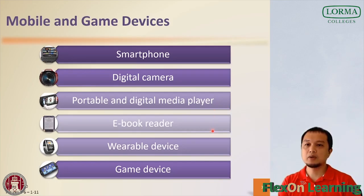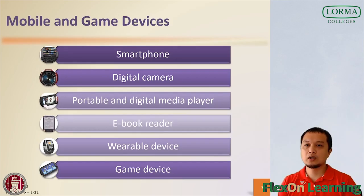An e-book reader, short for electronic book reader or e-reader, is a mobile device used primarily for reading e-books. An e-book or digital book is an electronic version of a printed book, readable on computers and other digital devices. In addition to books, you can typically purchase and read other forms of digital media such as newspapers and magazines. These devices are usually smaller than tablets but larger than smartphones.